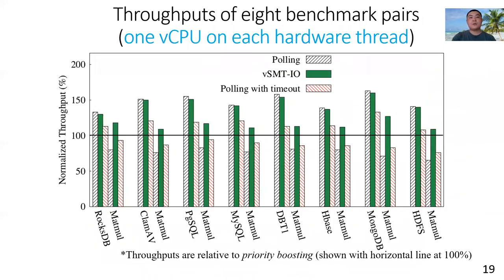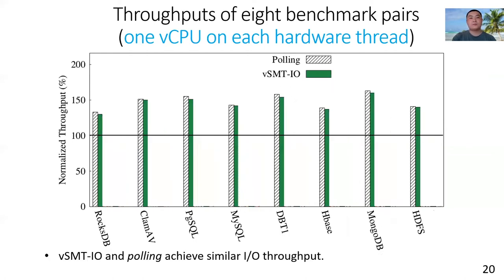This figure shows the normalized throughput of eight benchmark pairs when each VCPU has a dedicated hardware thread. On X, we show different benchmark pairs. On Y, we show the normalized throughput. Under this dedicated setting, polling can achieve the best IO workload throughput. Overall, vSMTIO and polling achieved similar IO workload throughput.